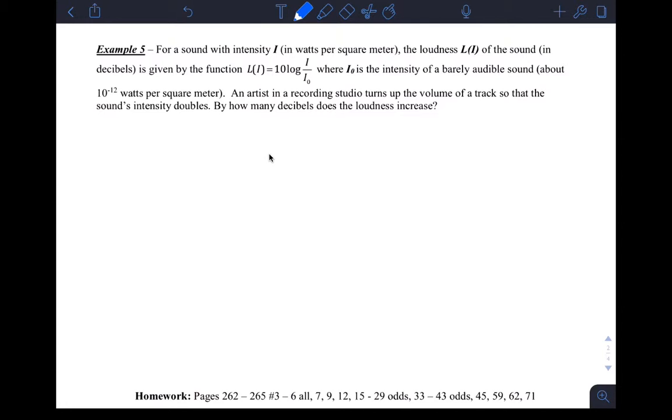Okay, so it says, for a sound with intensity i in watts per square meter, the loudness L of i of the sound in decibels is given by the function L of i equals 10 log base 10 of i over i sub zero, where i sub zero is the intensity of a barely audible sound. An artist in a recording studio turns up the volume of a track so that the sound's intensity doubles. By how many decibels does the loudness increase?